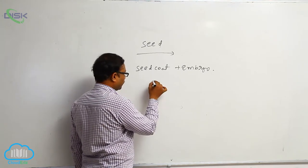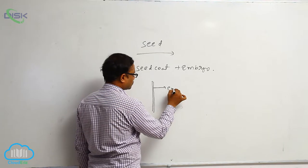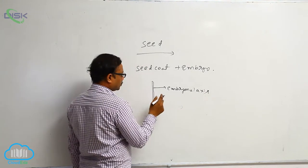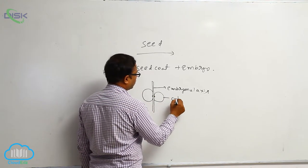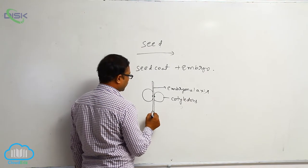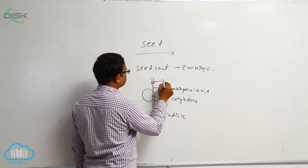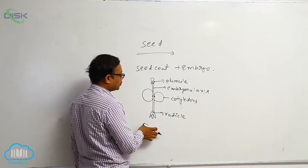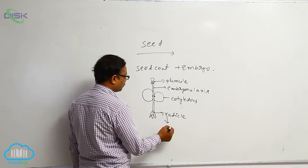This embryo having an axis, that is known as the embryonal axis. Both having that embryonal axis connected to the cotyledons. These are the cotyledons, above that and below that. Below that embryonal axis is known as radicle. At the time of seed germination, inside that embryo, the lower part of embryonal axis is known as the radicle. It is converting to the primary root.